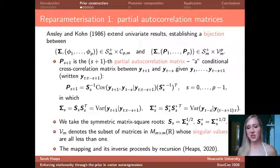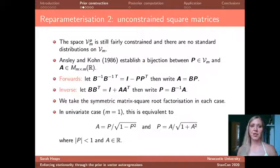So now, what have we achieved by doing this? Well, the constraints on this new set of parameters are much simpler. So the only constraint on the partial autocorrelation matrices is that their singular values are less than one. So this is kind of like the vector analog of the partial autocorrelations having to be less than one in absolute value.